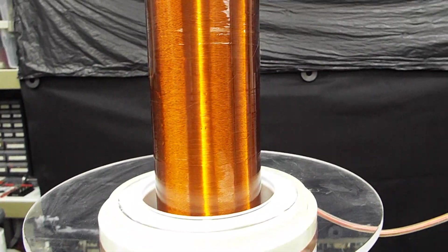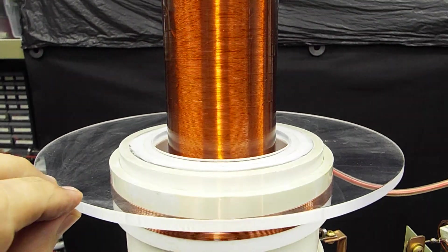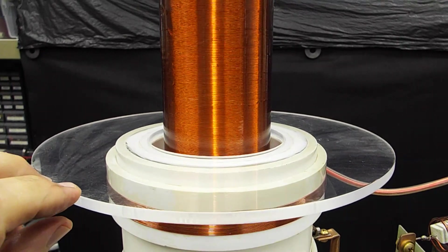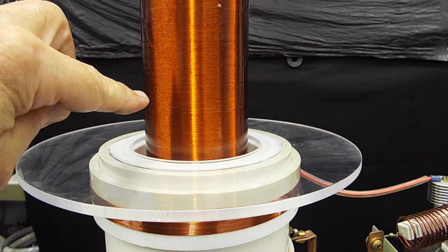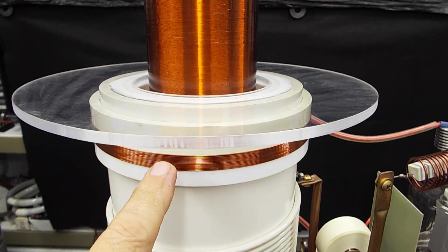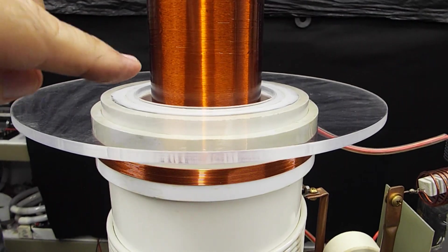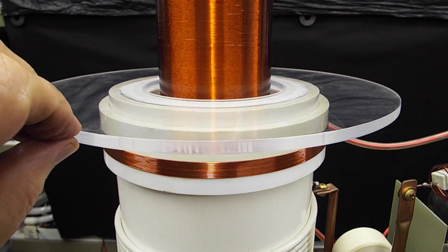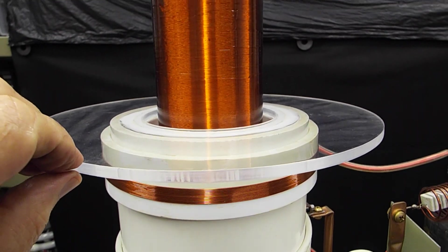And this is something I had to add later. This is a spark shield. I found that I would occasionally get arcing between the secondary coil and this grid feedback coil. So to prevent that, I made this spark shield.